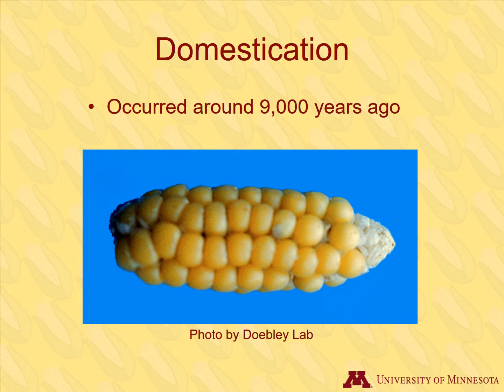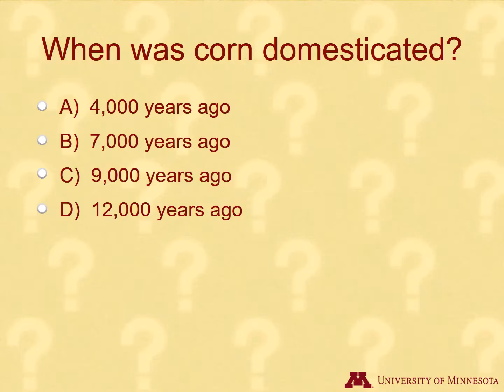The latest evidence suggests that corn was domesticated around 9,000 years ago. The photo above is a recreation of what the earliest corn may have looked like. Early corn lacked a seed coat, which made it easier for ancient people to use and eat.